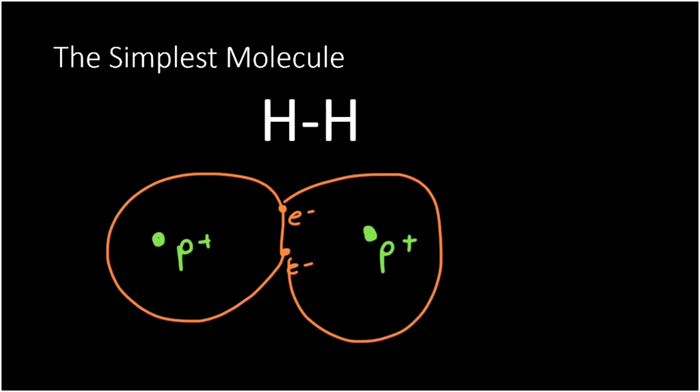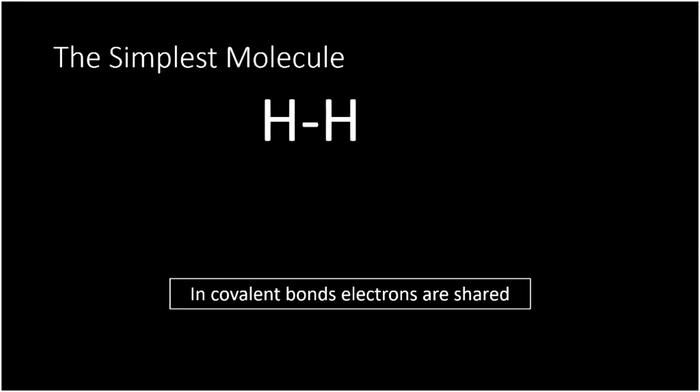So we have the two atoms stuck together, and the reason they're stuck together is because the protons are positive, and so the protons are attracted to these electrons. And the electrons are negative, and so they're actually attracted to both of these protons. And so this holds the whole atom together in one molecule. That's what a covalent bond is. In a covalent bond, the electrons are shared. They hang out in between the two nuclei, and they're shared.